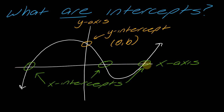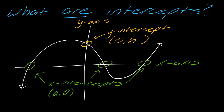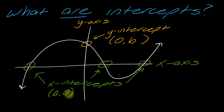Now look at the x-intercepts. I can see that there are multiple x-intercepts, but there's one thing for sure about the coordinate for all of these — the y-part of the coordinate, where the first part is just a placeholder for whatever number it hits on the x-axis — if it's crossing the x-axis, the y-coordinate is always going to be zero.